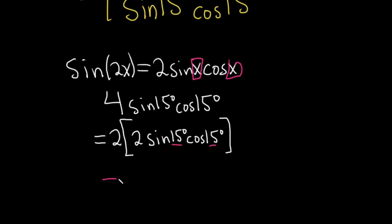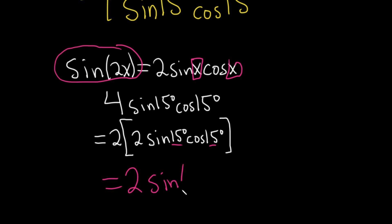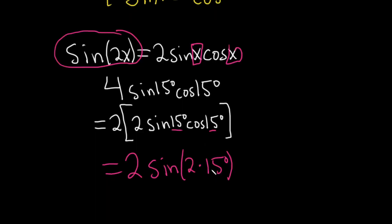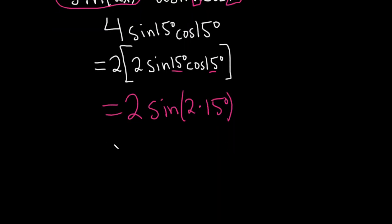So this is equal to 2, and right here the sine 2x is what goes here. So it'll be sine of 2 times 15 degrees, which gives us 2 sine of 30 degrees.